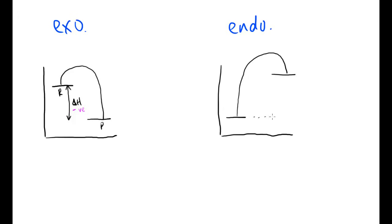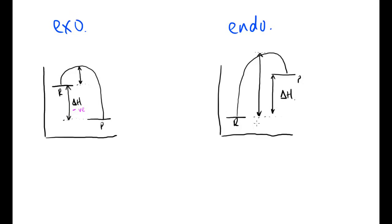In both diagrams, something is missing: the activation energy, represented by the hump on the energy profile. The activation energy is the energy required for the reaction to take place — the initial energy input needed to get the reaction started.